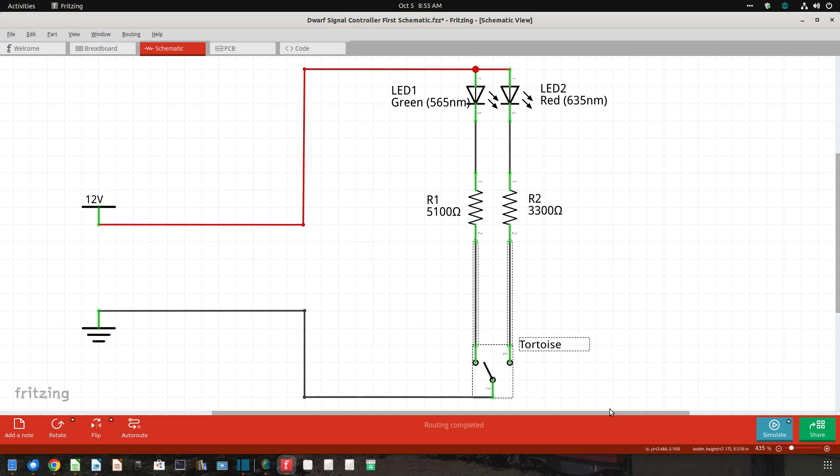The two cathodes are connected to the switch machine, and the common switch machine terminal is connected to ground. This circuit will work for any common anode device with two LEDs, but it won't work for a common cathode device.